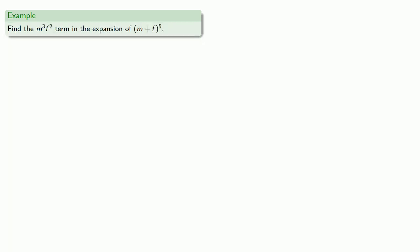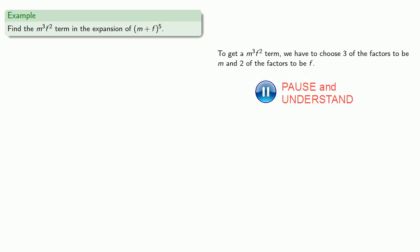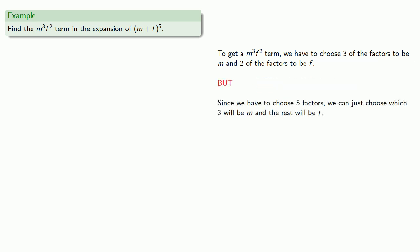Let's see if we can calculate some terms. Let's find the m cubed f squared term in the expansion of m plus f to the 5th. To get an m cubed f squared term, we have to choose 3 of the factors to be m and 2 of the factors to be f. But since we have to choose 5 factors, we can just choose which 3 will be m and the rest will be f.